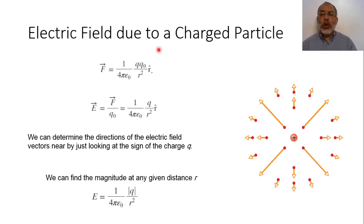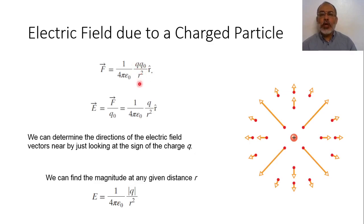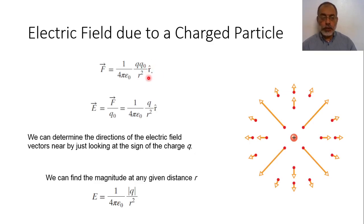From Coulomb's law, we know that the force between two charges is given by the Coulomb constant K, which is 1 over 4π epsilon naught, multiplied by charge 1 multiplied by charge 2 over the distance squared between them. The direction of this force is going from charge 1 to charge 2, or in the unit vector R direction.